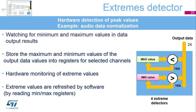The extremes detector monitors the conversion results and stores the extremes into minimum and maximum registers, together with the associated channel number. Monitoring of data extremes is performed only on selected channels to ensure that channels do not mix different input levels. Stored extreme values are refreshed each time the values are read from the register.